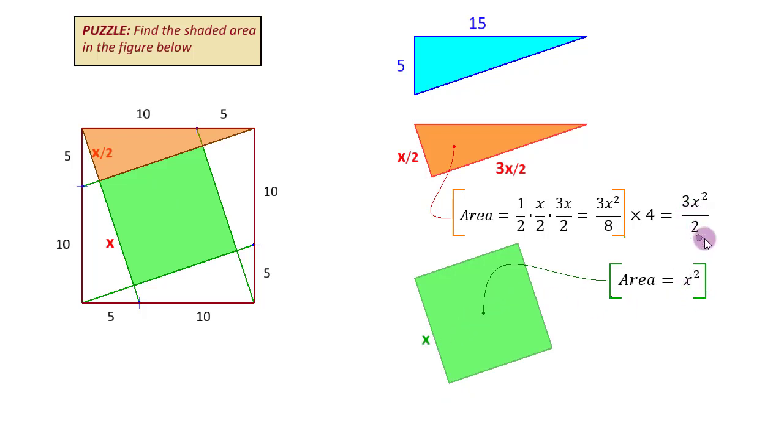Now we have both the areas - the area of the white space and the area that we are looking for. We can simply add them together. So 3x square upon 2 plus x square gives us 5 upon 2 times x square, and the total area is 225. It is just a matter of simplifying - divide by 5 we get 45, multiply by 2 we get x square or the area as 90. So that is our answer, 90 square units.